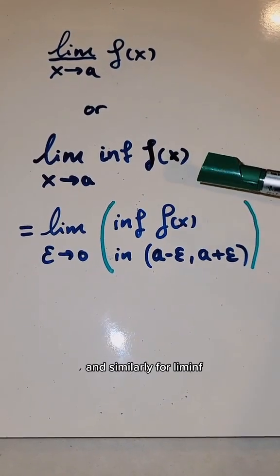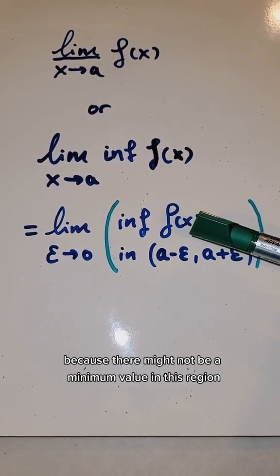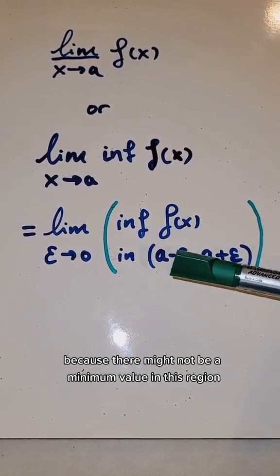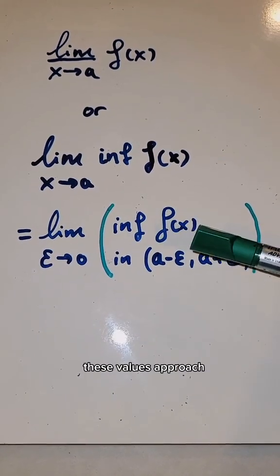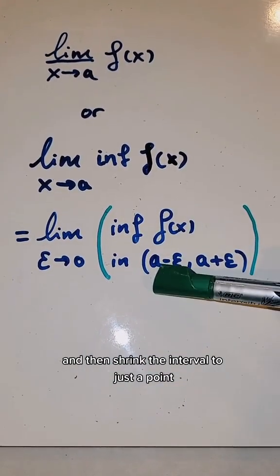And similarly for liminf, you take the infimum, so not the minimum because there might not be a minimum value in this region, but the infimum, so the smallest value these values approach, and then shrink the interval to just a point.